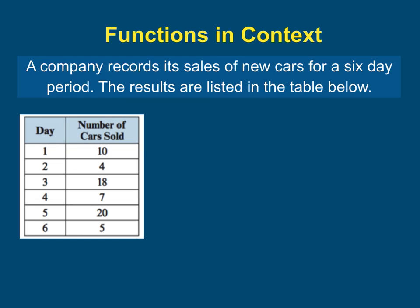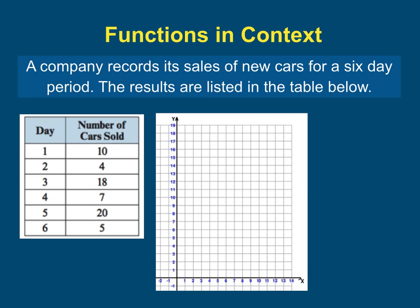So maybe it might be a good idea if we grab a coordinate plane and I want to make sure I can fit my x values and my y values. Now if I were to graph these as ordered pairs, the day number would be your input, that's your domain, and your range is your number of cars sold. So 1, 10 should be graphed, 2, 4, 3, 18.